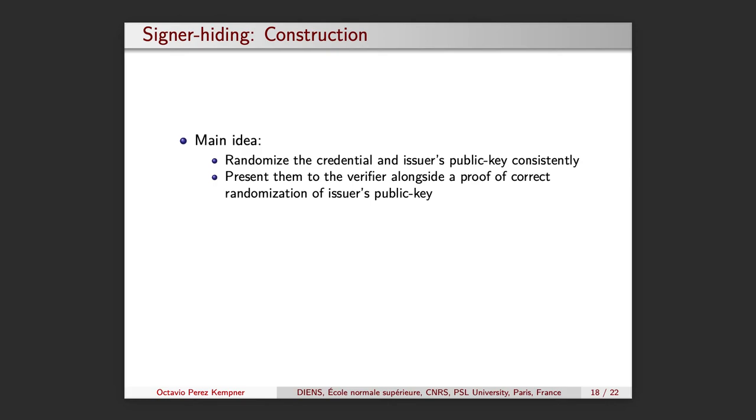The next step is to present the updated signature and public key to the verifier, alongside a proof of correct randomization of the issuer's public key. This ensures that the user did not sample a public key and self-sign his own credential. For the proof of correctness, we can use a 1 out of n OR proof, which in our case is a fully adaptive NIZK argument.